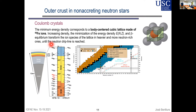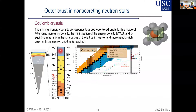Even-even nuclei dominate because they are more bound and have lower mass per nucleon. A second nuclear structure effect is closed shells: when neutron or proton numbers close a quantum shell, the energy of the nucleus is minimized. This drives the system toward closed shell nuclei — N=50 then N=82. This is how people predict the composition of the outer crust from the surface down through a few hundred meters.